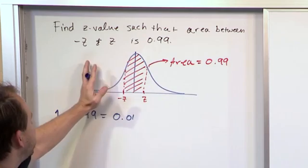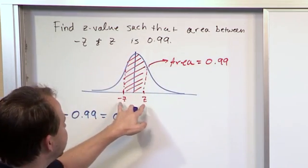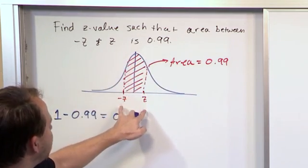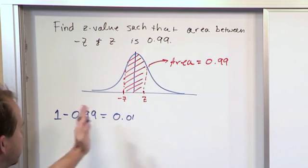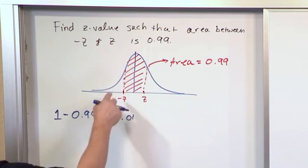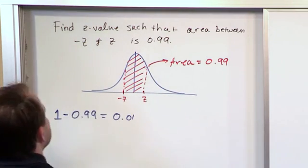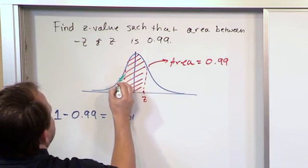Now, I have an equal amount of area here as I do here because z and minus z are both on the same side of the mean in equal distance. So what if I want to figure out what this area is right here? What would that area be? Because I can look that up from the table.